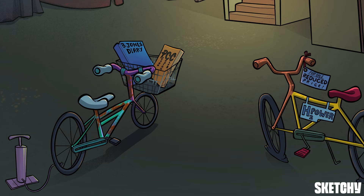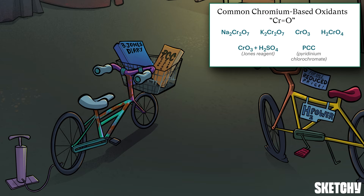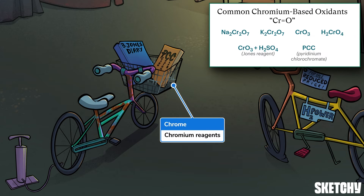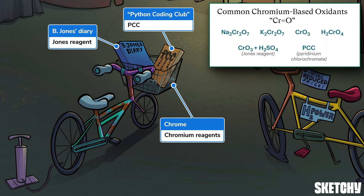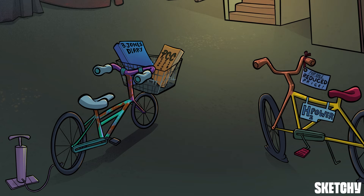Now that we have a good handle — or handlebar — on how to tell if oxidation or reduction has happened, we need to know how to do these reactions. Let's start with oxidation. Most oxidation reactions you'll see involve chromium oxo reagents, so we've put a shiny chrome basket on our rusty oxidation bike. Pretty much any time you see chromium and oxygen in a reagent's formula, you can be sure it's meant to do oxidation. A few important chromium reagents have sneaky names though — don't let PCC (pyridinium chlorochromate) and the Jones reagent fool you; they're both based on chromium. The pamphlet for sketchy use Python Coding Club and this reader's copy of B. Jones's diary are in the chrome basket to remind you that PCC and the Jones reagent are chromium oxidants.